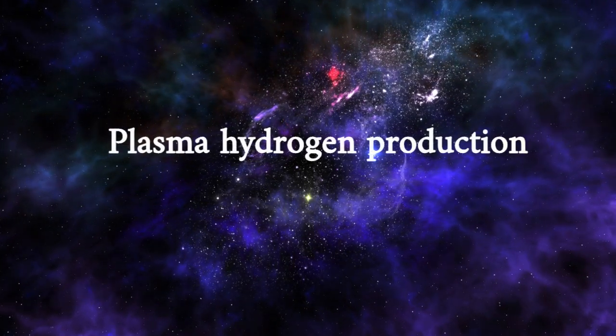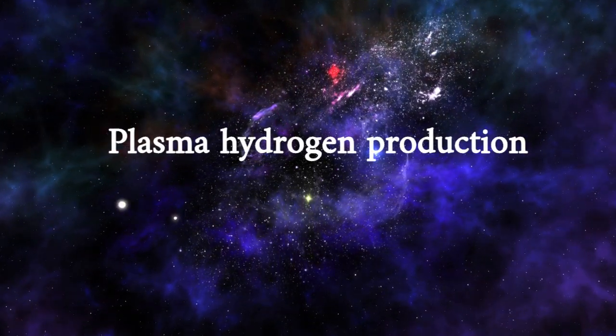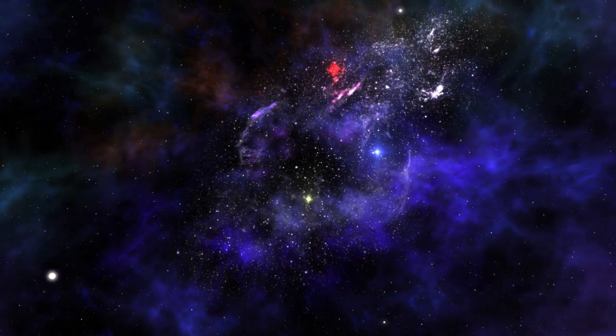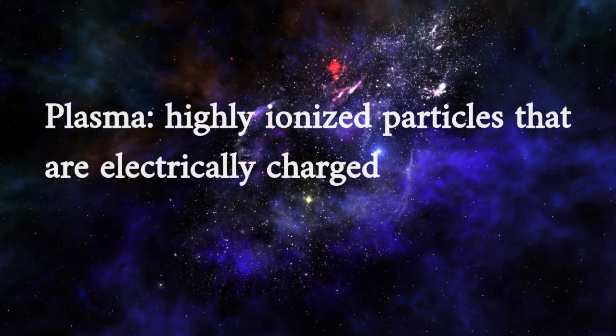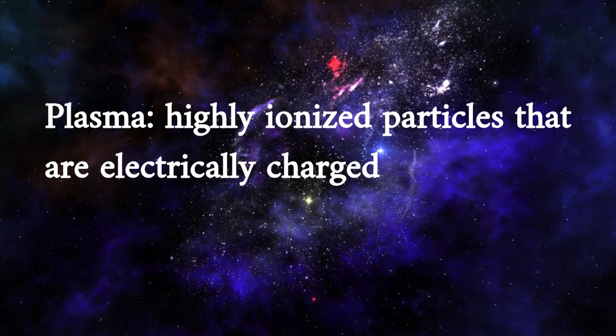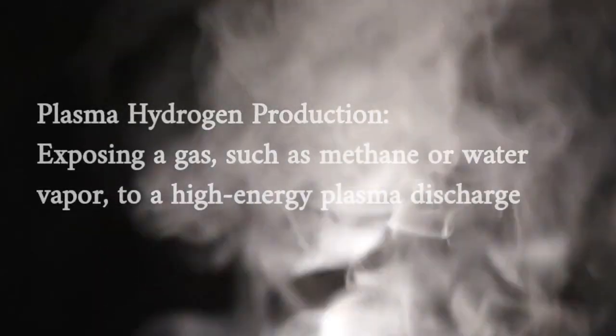Plasma hydrogen production is a method of producing hydrogen gas using plasma, which is a state of matter similar to gas but consisting of highly ionized particles that are electrically charged. The process involves exposing a gas such as methane or water vapor to a high-energy plasma discharge.